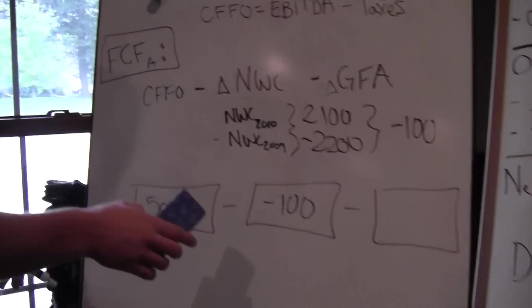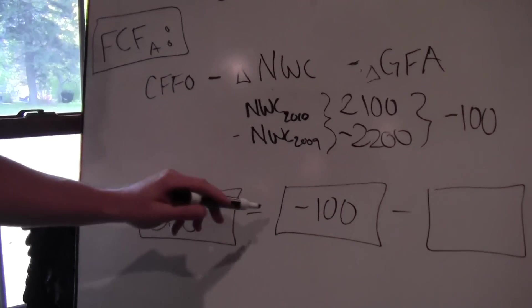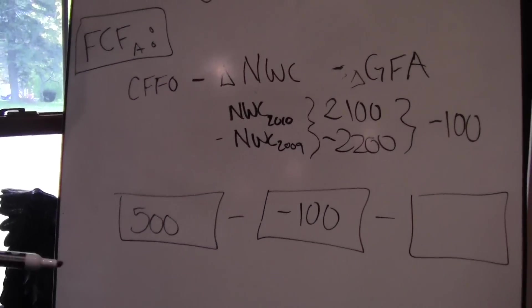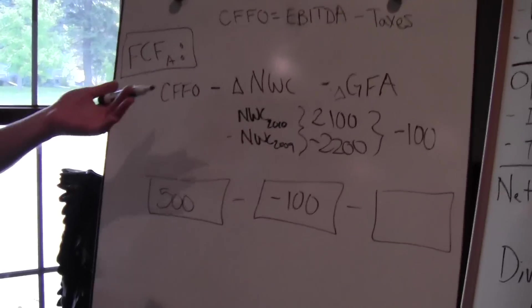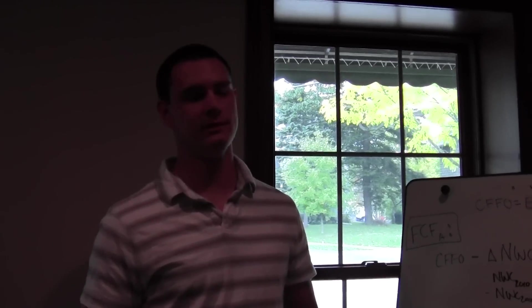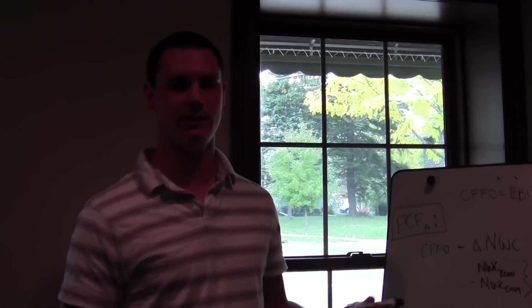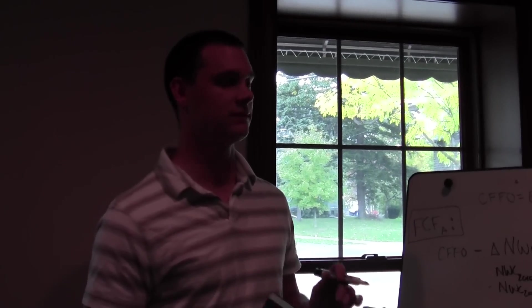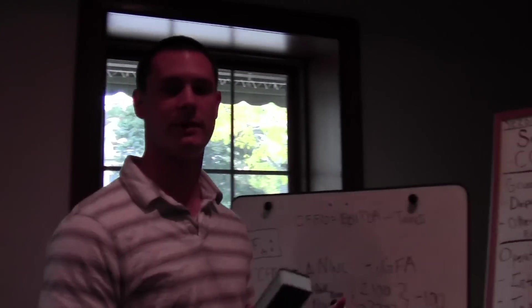So now if you look at our equation here, we're going to have a minus minus, so we want to be careful after we find our change in gross fixed assets. Gross fixed assets, that's our plant, property, and equipment. We're using gross because we don't want to use net since we already added back depreciation. That's the difference, it's a huge point to make there.